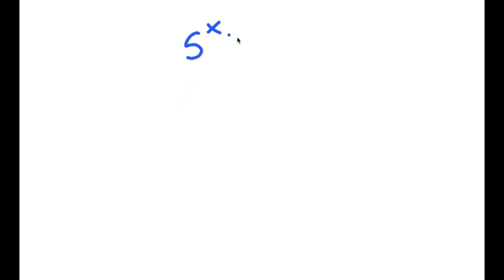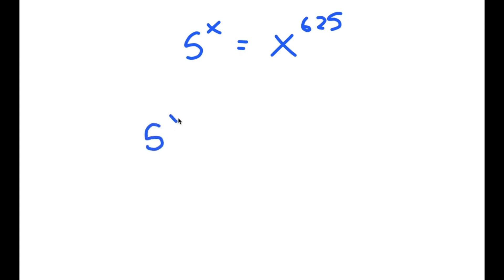In this video, I'm going to solve the equation 5 to the power of x is equal to x to the power of 625. To solve this, I'm going to first take the power of 1 over 625x on both sides.